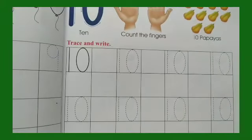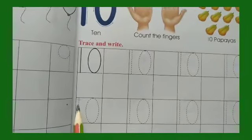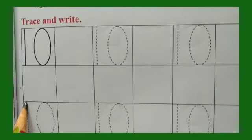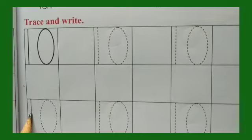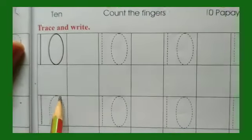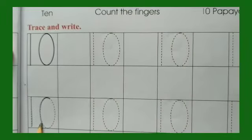Now what we have to do? We have to trace and write number 10. So let us make standing line first, okay? Standing line and then 0.